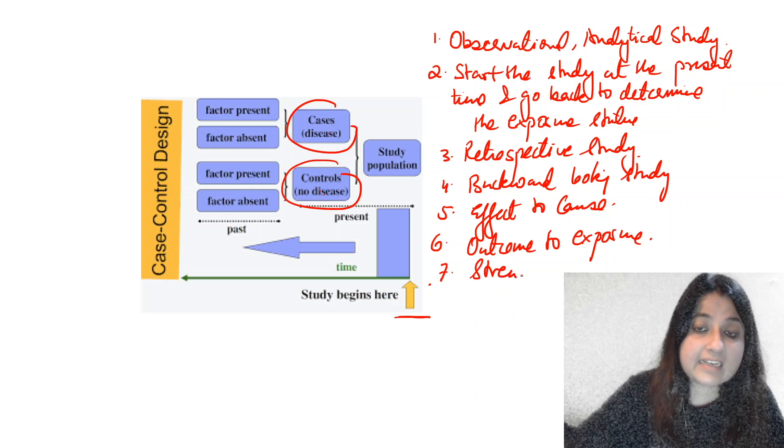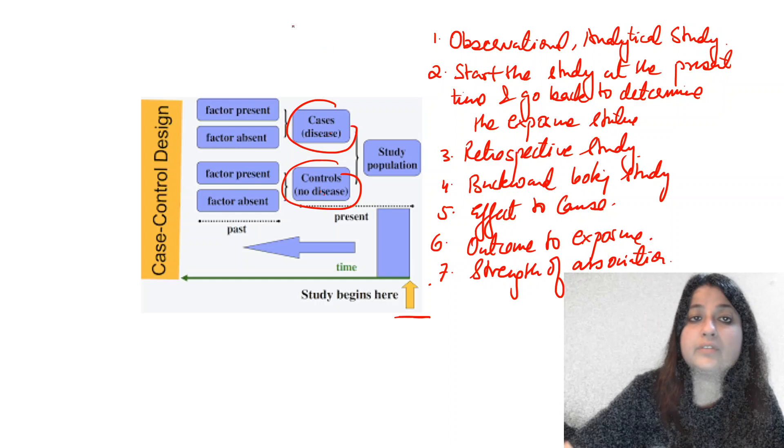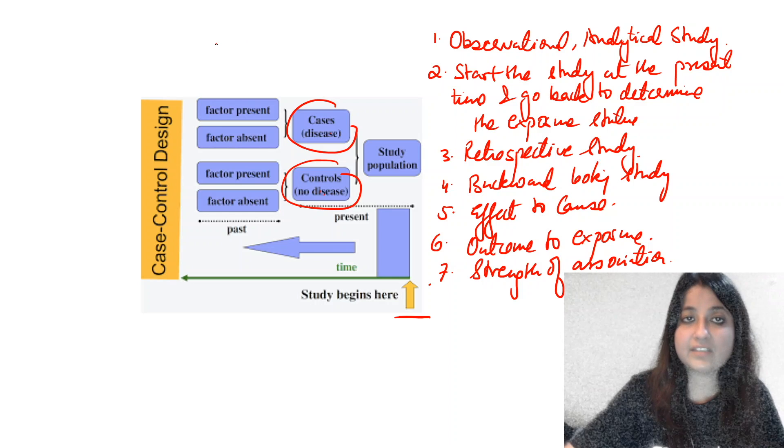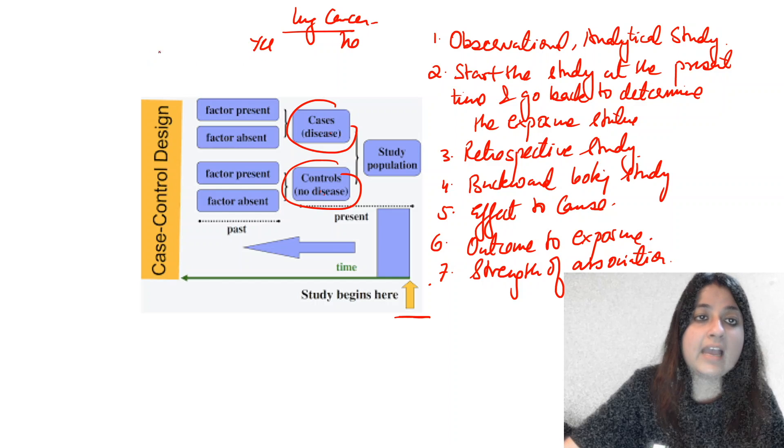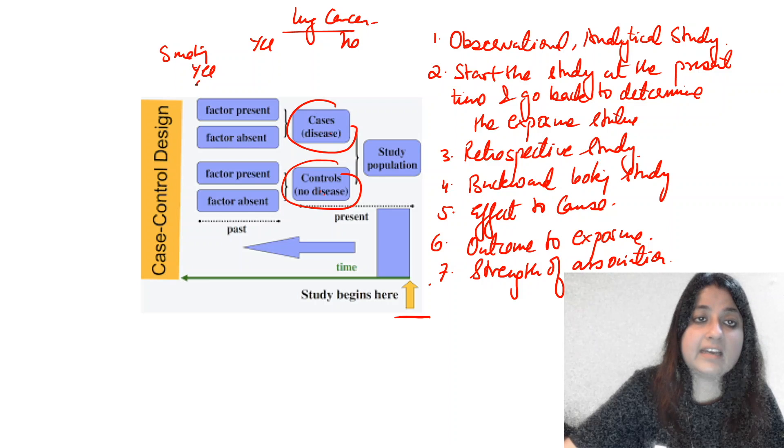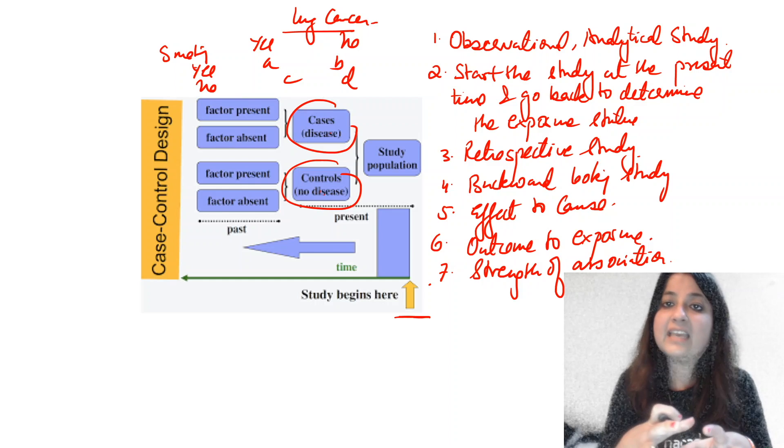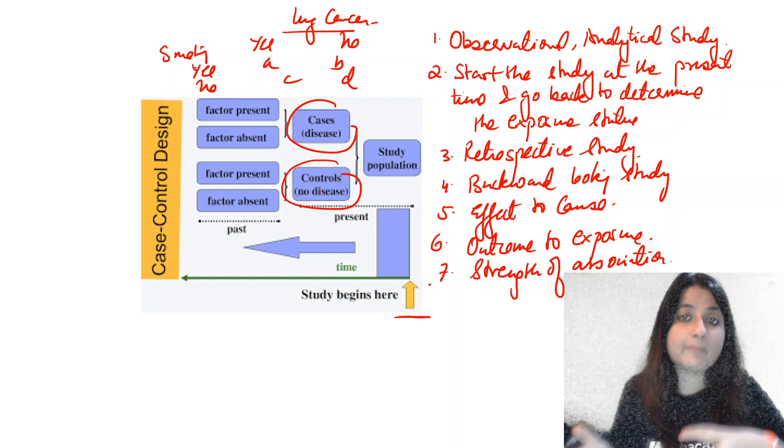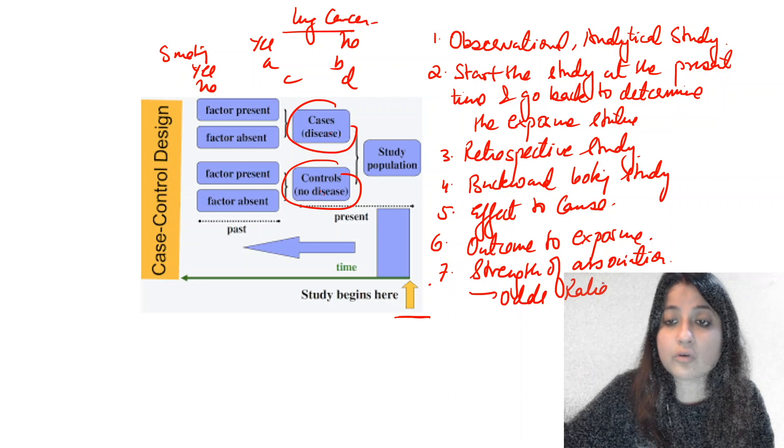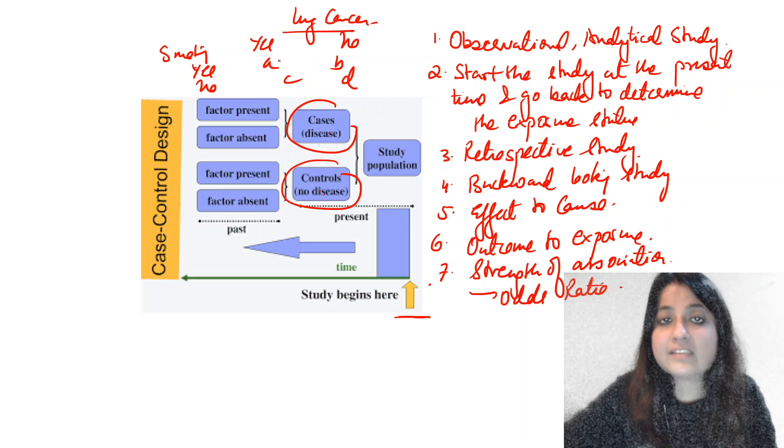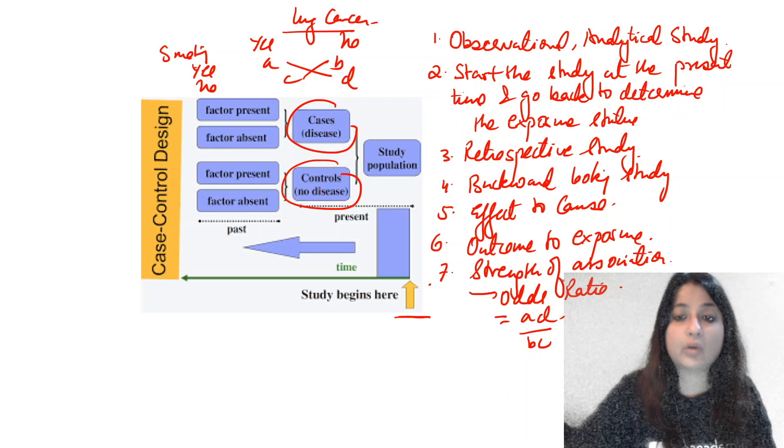What does case control tell us? It gives us a measure of strength of association. Suppose we want to study an association between lung cancer and smoking. So I will make lung cancer yes or no, and here I am going to put smoking yes or no. This is a two-by-two table. Lung cancer cases have already occurred with me, so we go back to determine exposure status. That strength of association is given by an odds ratio. The formula for odds ratio is AD upon BC.